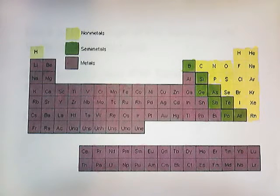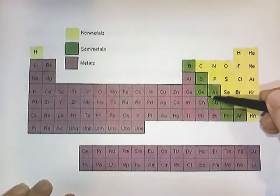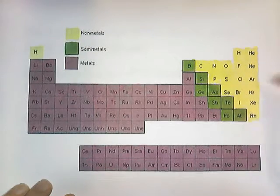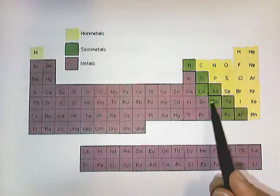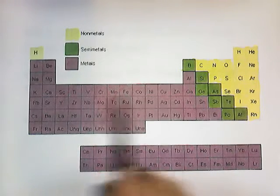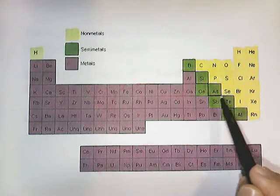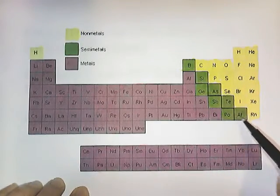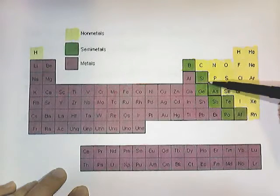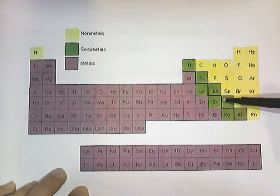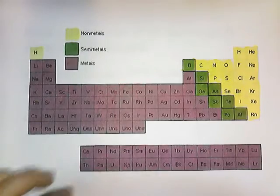Some periodic charts have a thick jagged diagonal line on the right side running down from boron to astatine. In general, metals are to the left of this jagged line. Non-metals are to the right. The semi-metals or metalloids exist along the jagged line. If either the entire side or the entire bottom of a box is touching the jagged line, that means it's a metalloid or semi-metal.